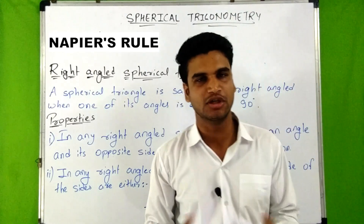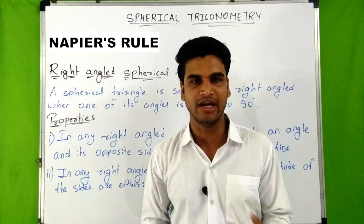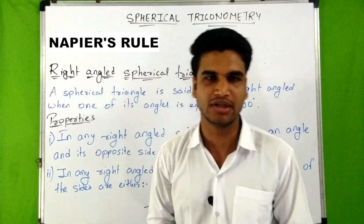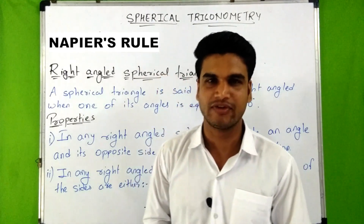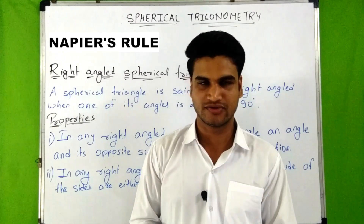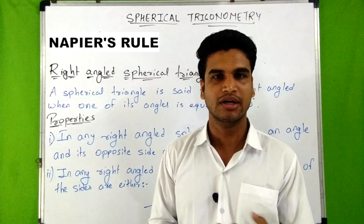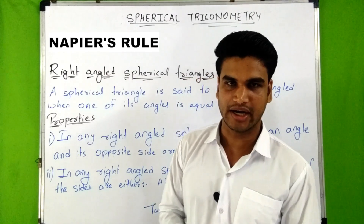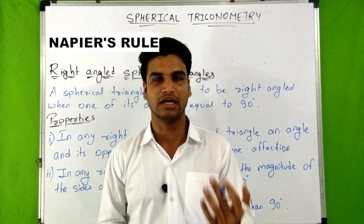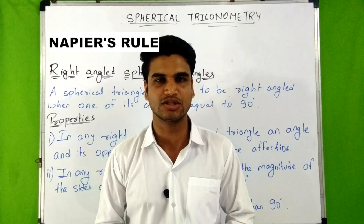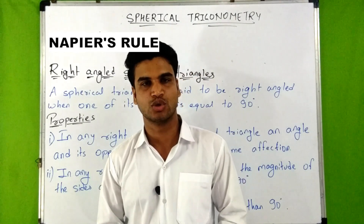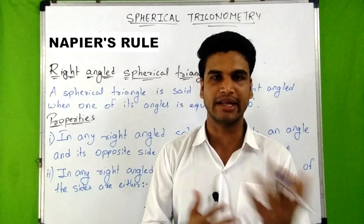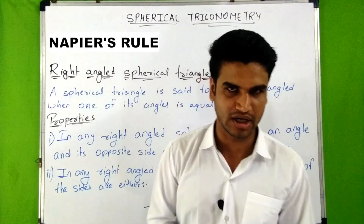Napier's Rule is actually used in a spherical triangle when an angle is equal to 90 degrees or a side is equal to 90 degrees. In spherical trigonometry, if an angle equals 90 degrees the triangle is known as a right-angled spherical triangle, and if a side equals 90 degrees it is known as a Quadrant Spherical Triangle. Napier's Rule is used in both of these conditions.